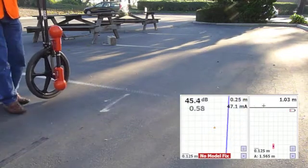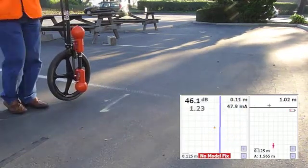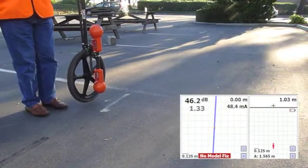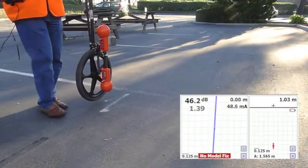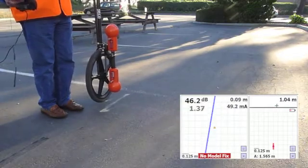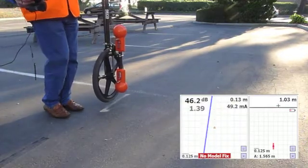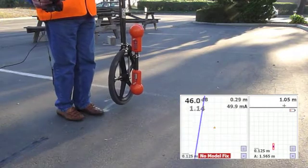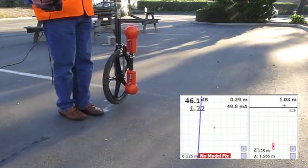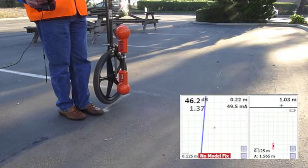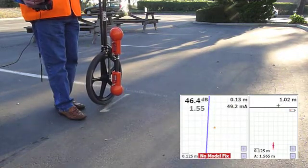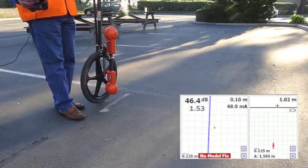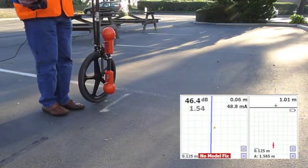As we move closer to the utility line, we notice that the db value increases. Once we move over the line, we notice it begins to decrease. When we go towards the line again, we can pinpoint the highest db value by finding the highest offset, in this case around 1.56 or 1.57.